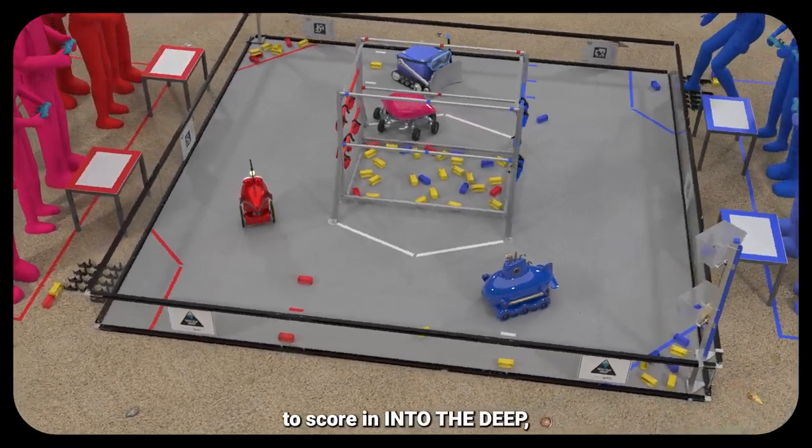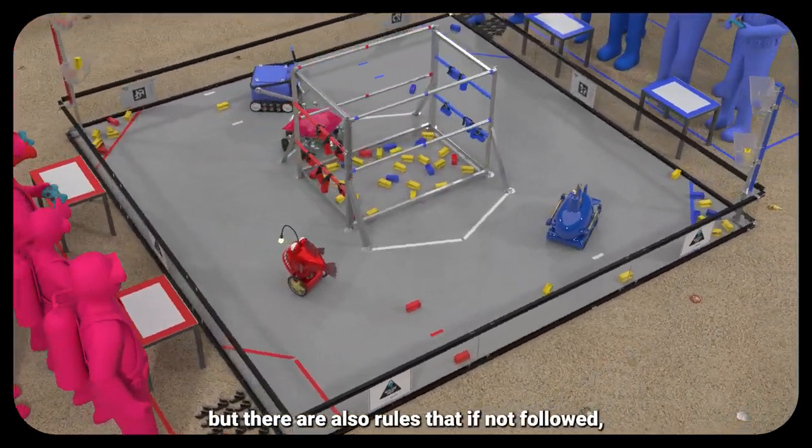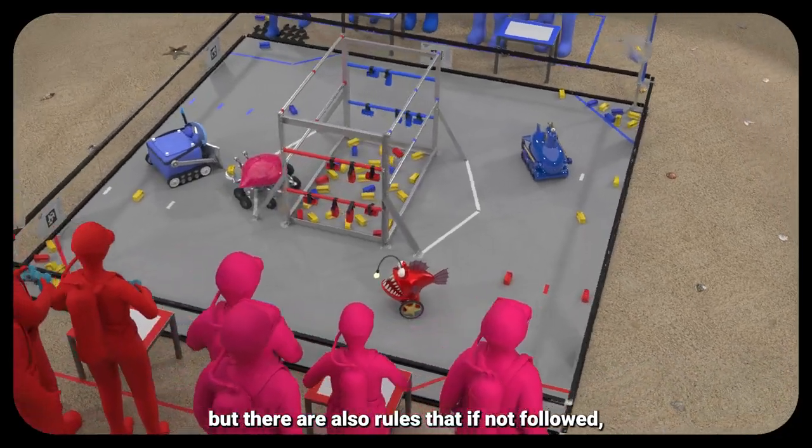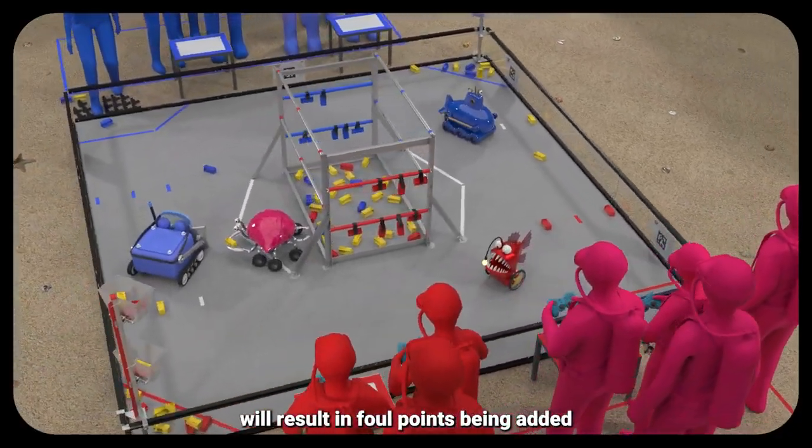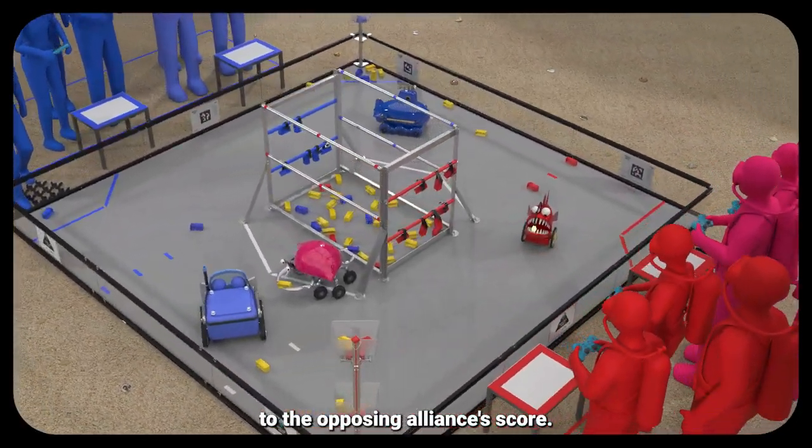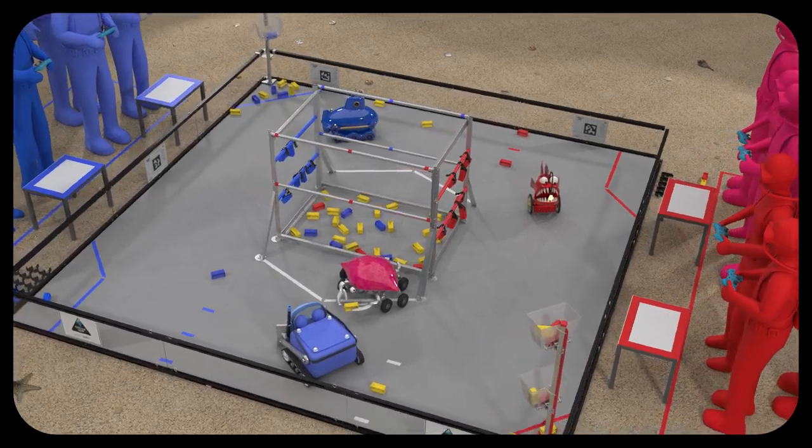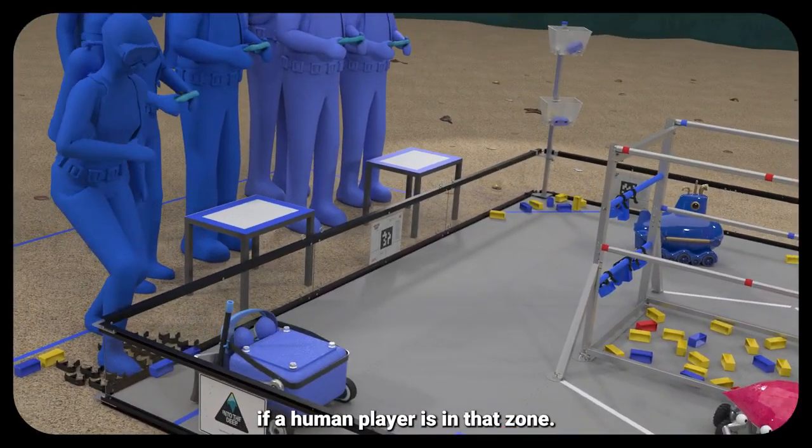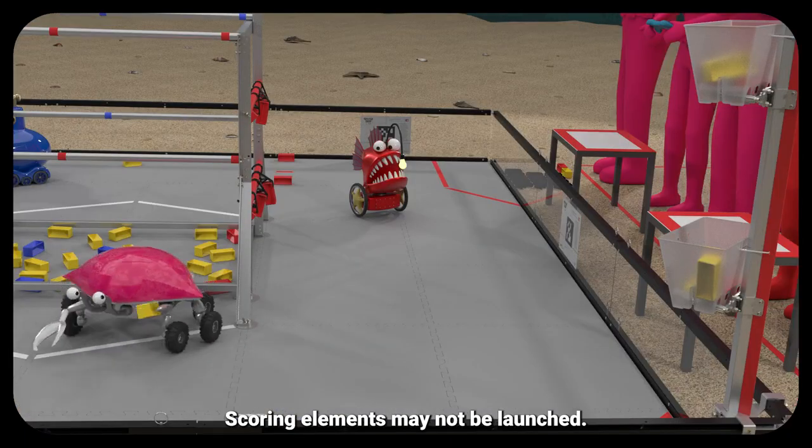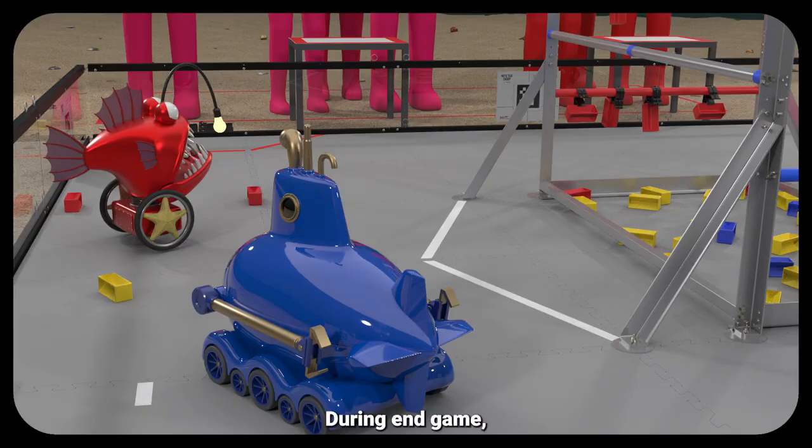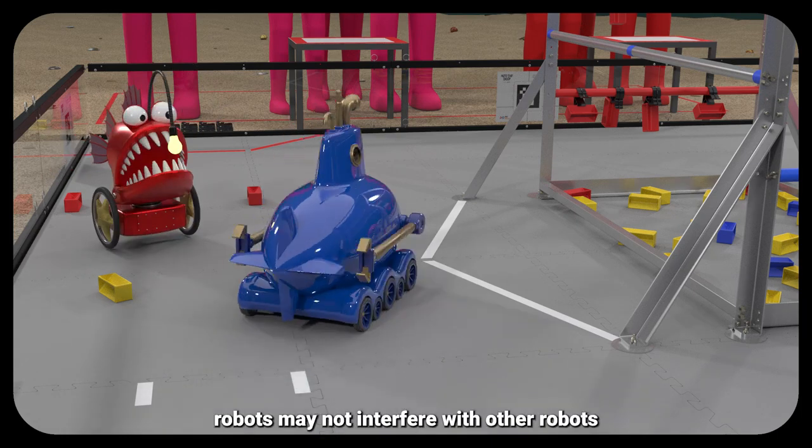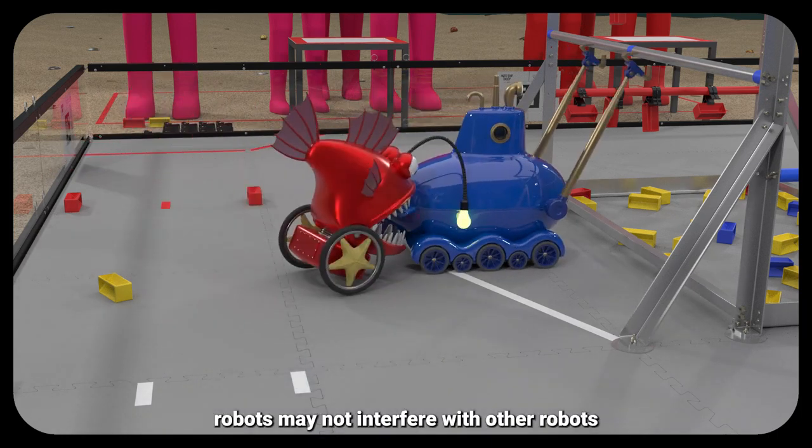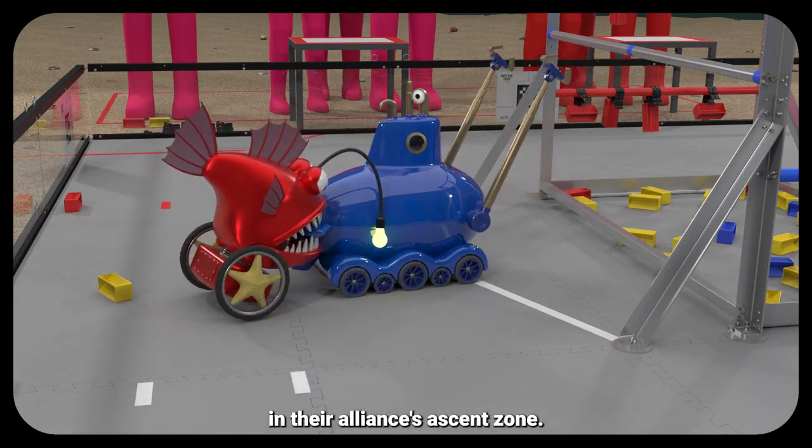There are many ways to score in Into the Deep, but there are also rules that, if not followed, will result in foul points being added to the opposing alliance's score. A robot cannot enter the observation zone if a human player is in that zone. Scoring elements may not be launched. During endgame, robots may not interfere with other robots in their alliance's ascent zone.